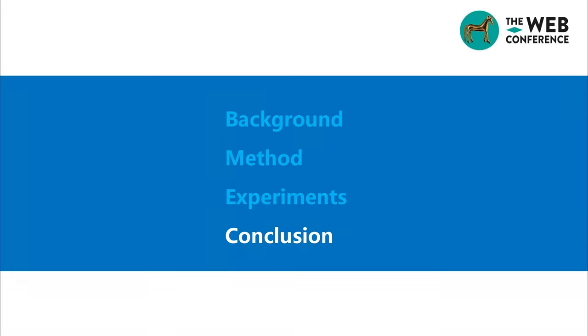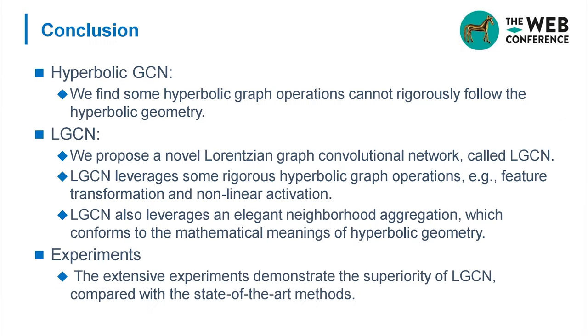Now, let's summarize this work. We find some hyperbolic graph operations cannot rigorously follow hyperbolic geometry. So, we propose a novel Lorentzian graph convolutional network called LGCN. LGCN leverages rigorous hyperbolic graph operations, for example, feature transformation and nonlinear activation. LGCN also leverages an elegant neighborhood aggregation, which comes from the geometrical meaning of hyperbolic geometry.